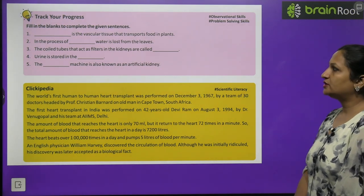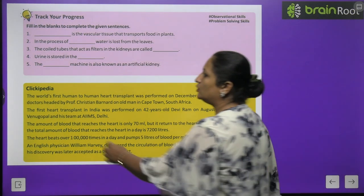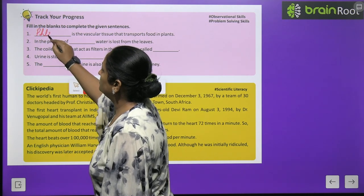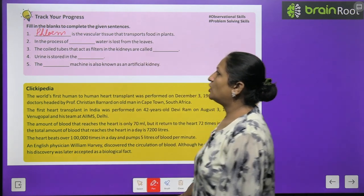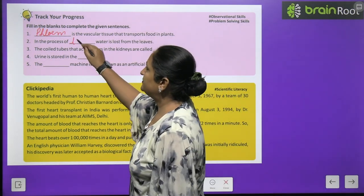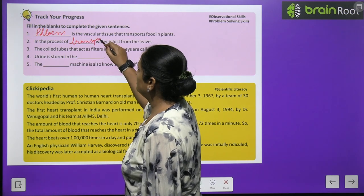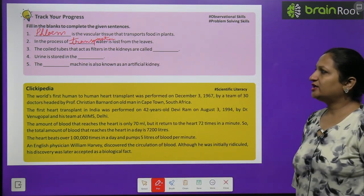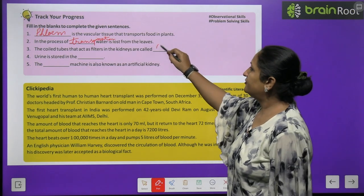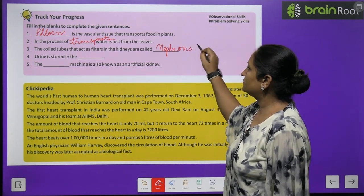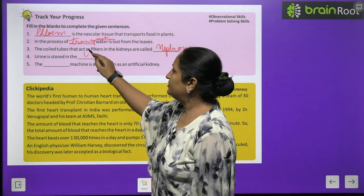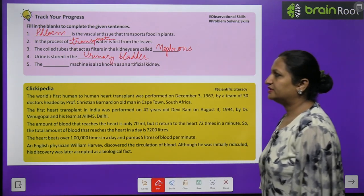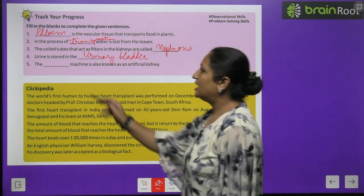Track your progress. Phloem is the vascular tissue that transports food in plants. In the process of transpiration, water is lost from the leaves. The coiled tubes that act as filters in the kidney are called nephrons. Urine is stored in the urinary bladder. The dialysis machine is also known as the artificial kidney.